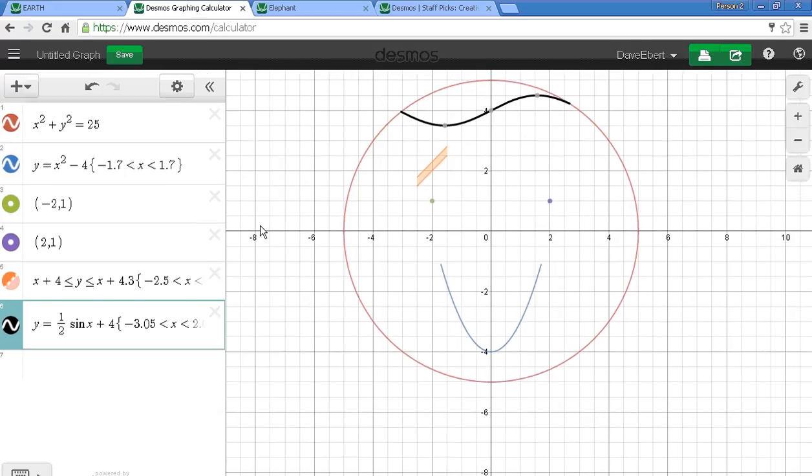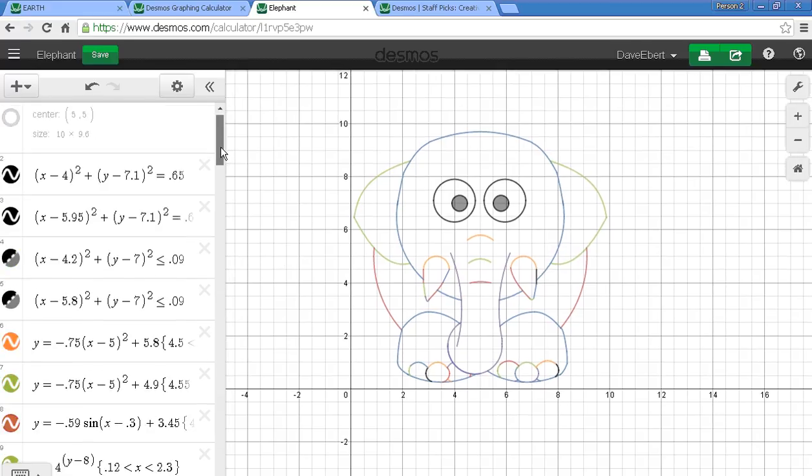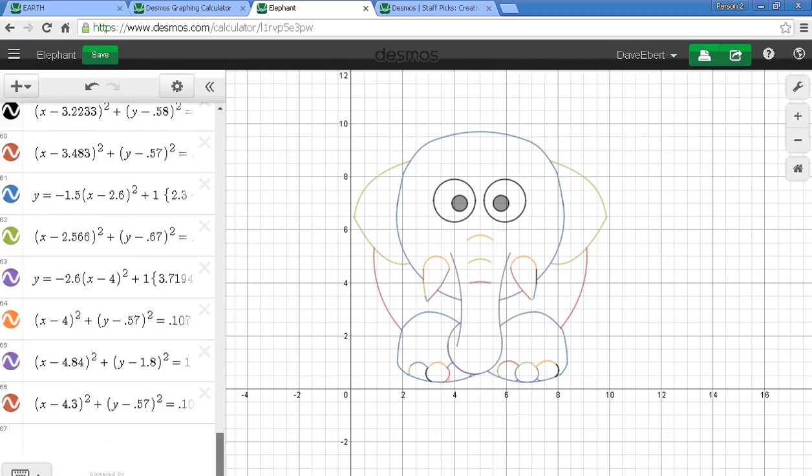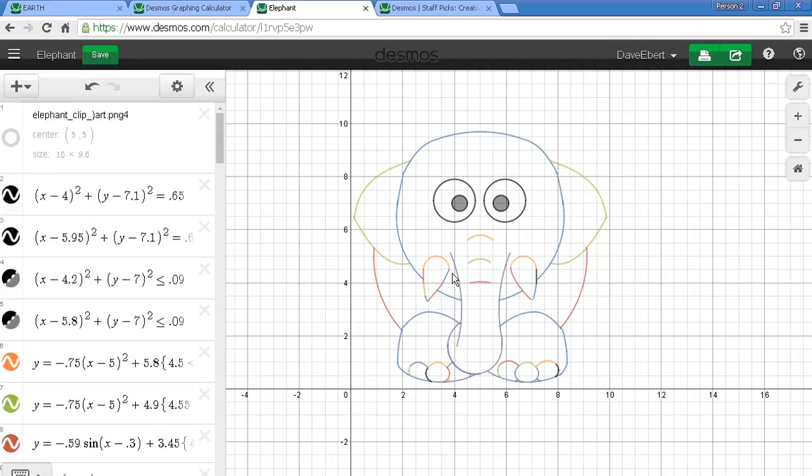Of course, I would continue and continue until this person looked exactly like I wanted them to look. I'll give you another example of a student who created one of these. This student created an elephant. I'm going to scroll down here. It took 66 different equations and inequalities to make this elephant here.